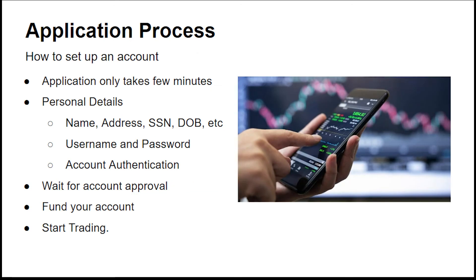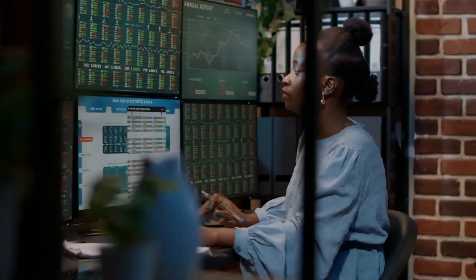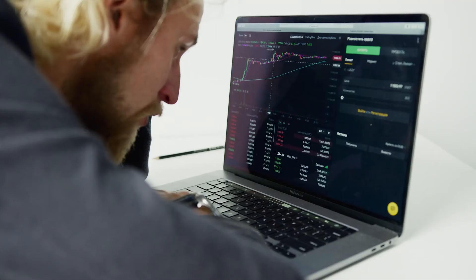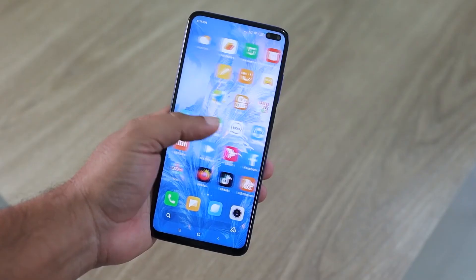The application is incredibly simple and will only take you a few minutes. All you have to do is submit your personal details, such as your social security number, name, address, and date of birth. It will also require you to enter a username and password and authenticate your identity. Once submitted, you will wait for your application to be accepted, which is typically very quick. Then you will fund your account through a bank transfer and begin trading stocks. I recommend signing up using your desktop as it makes registration easier, but you can also join using your phone.